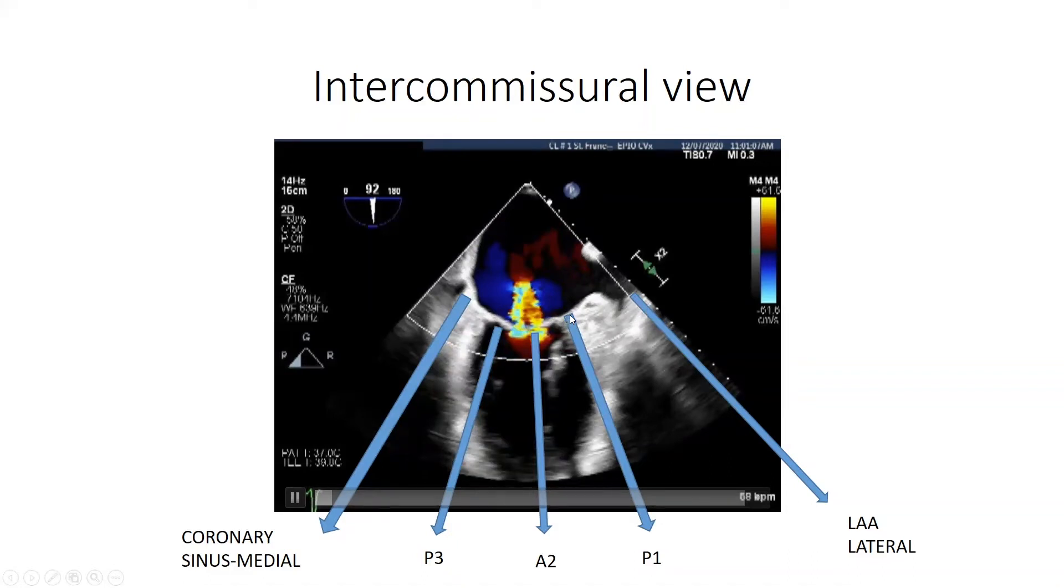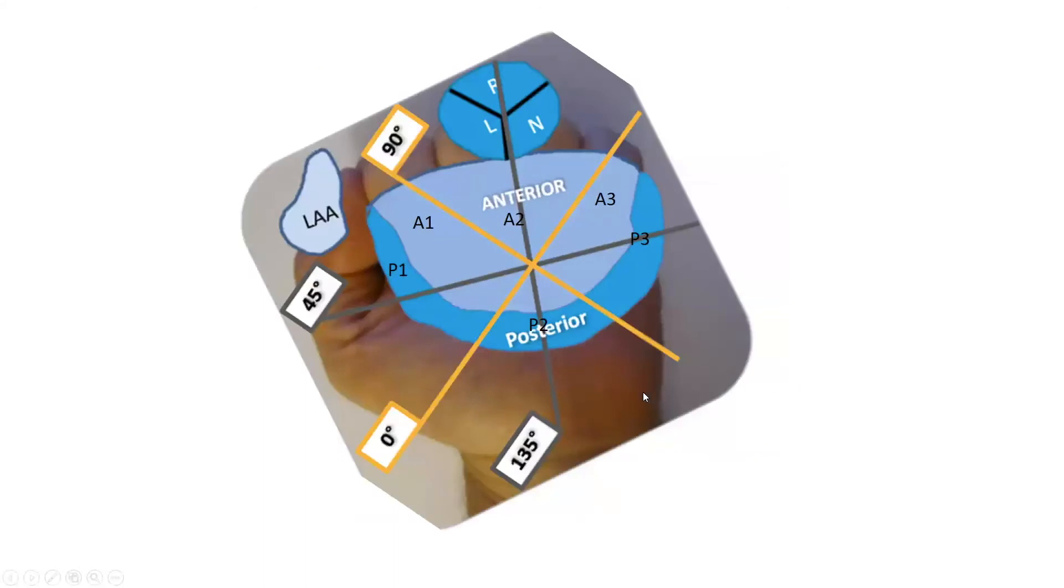This, furthermore, would make this leaflet P1, with the middle of our view representing leaflet A2, followed by leaflet P3, which is on the most medial aspect of our annulus. Let's take a look at the schematic and see if this makes sense.